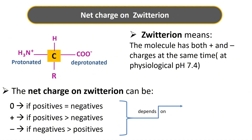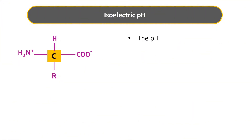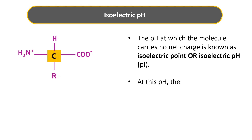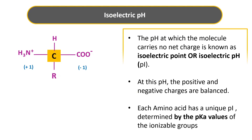All three possibilities depend on the isoelectric pH of the individual amino acid. The pH at which a molecule carries no net charge is called its isoelectric pH — at this pH the positive and negative charges are balanced. Each amino acid has a unique isoelectric pH, which can be determined by the pKa values of its ionizable groups: the carboxyl group and the amino group.